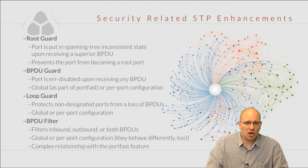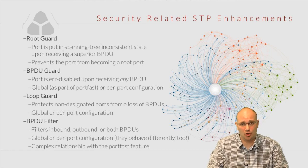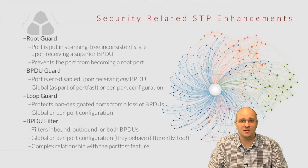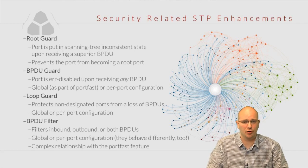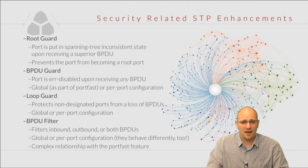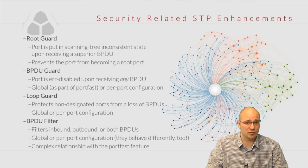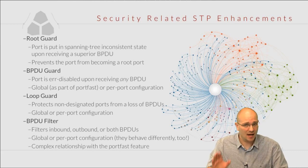The root guard is a feature that is usually configured on designated ports and it is designed to protect the switch from receiving a superior BPDU. If the port receives a superior BPDU, it will be put in a spanning tree inconsistent state. I will talk about it in a bit more detail in a moment.